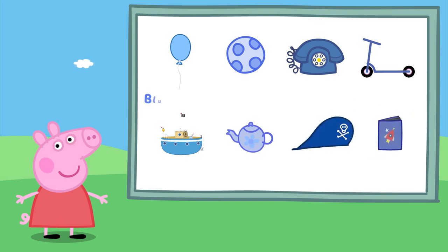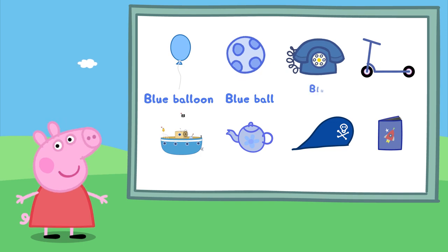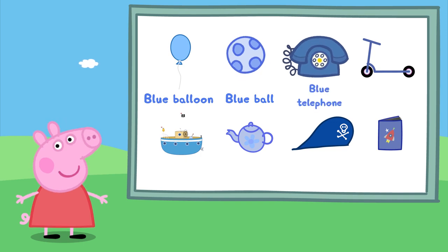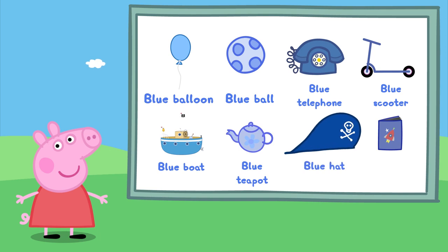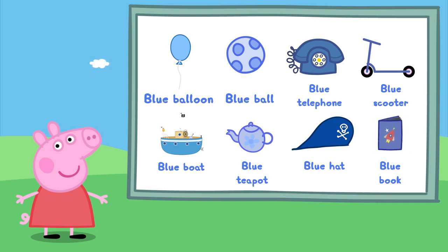Well done! A blue balloon, a blue ball, a blue telephone, a blue scooter, a blue boat, a blue teapot, a blue hat, and a blue book. Well done! You remembered all the blue objects. Goodbye Peppa.